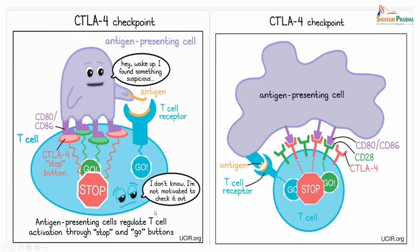So the antigen presenting cells regulate T cell activation through stop or go buttons. If CD28 binds, then it is a go button. If the CTLA4 binds, then it is a stop button. This is an antigen presenting cell with CD80. If it is binding to CD28, it is a go button. Whereas if it is binding to CTLA4, then it is a stop button.